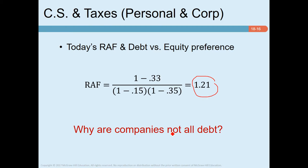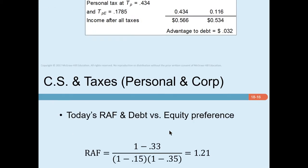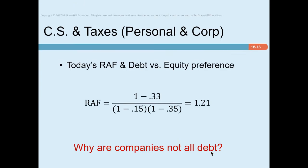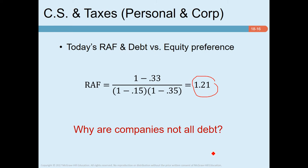Since the relative advantage is 1.21 and debt holders earn 0.032 more than equity holders, it is better for the company to use debt in this circumstance. This naturally raises the question: if that's the case, why don't all companies have very high levels of debt? We will answer this question in the next video.